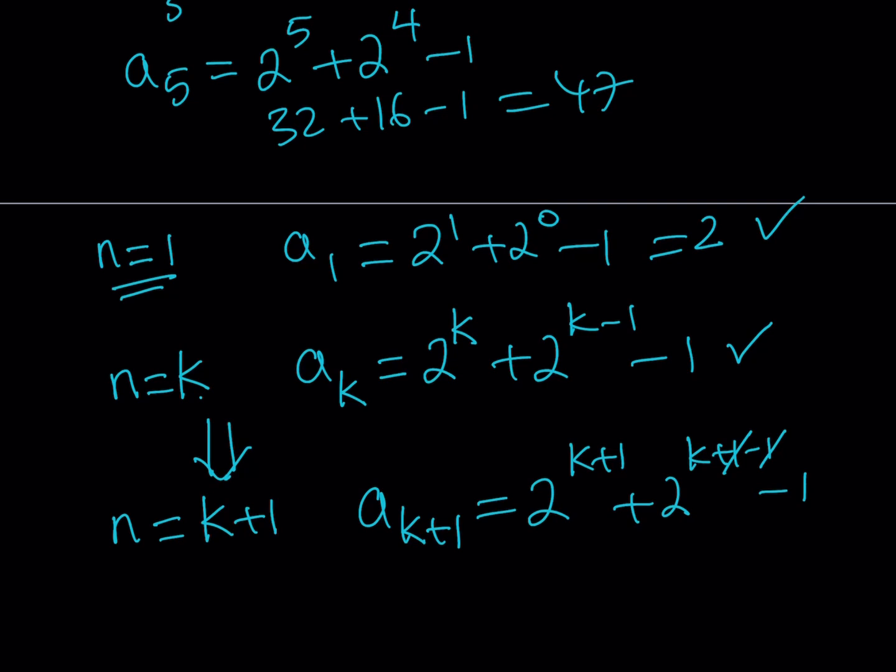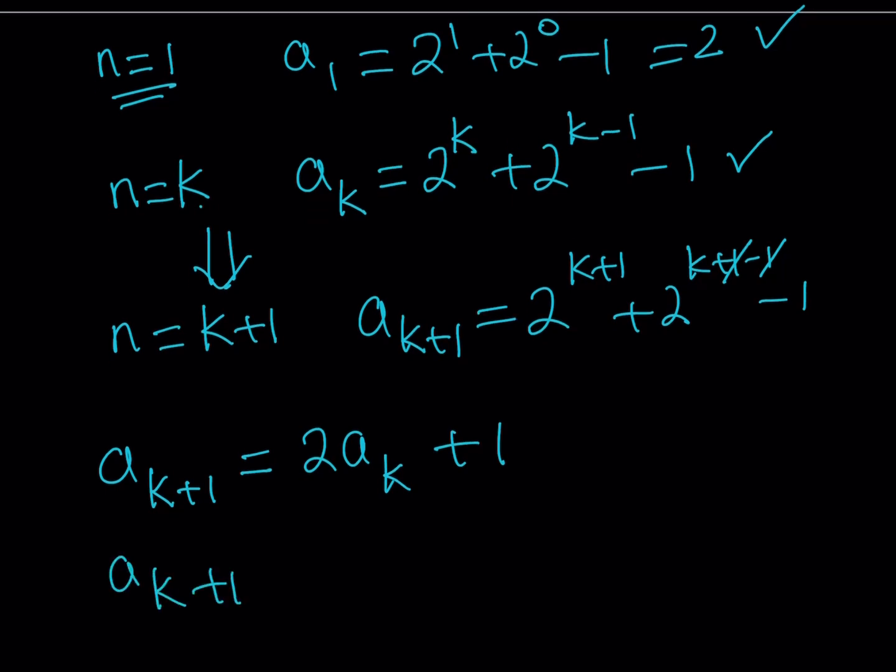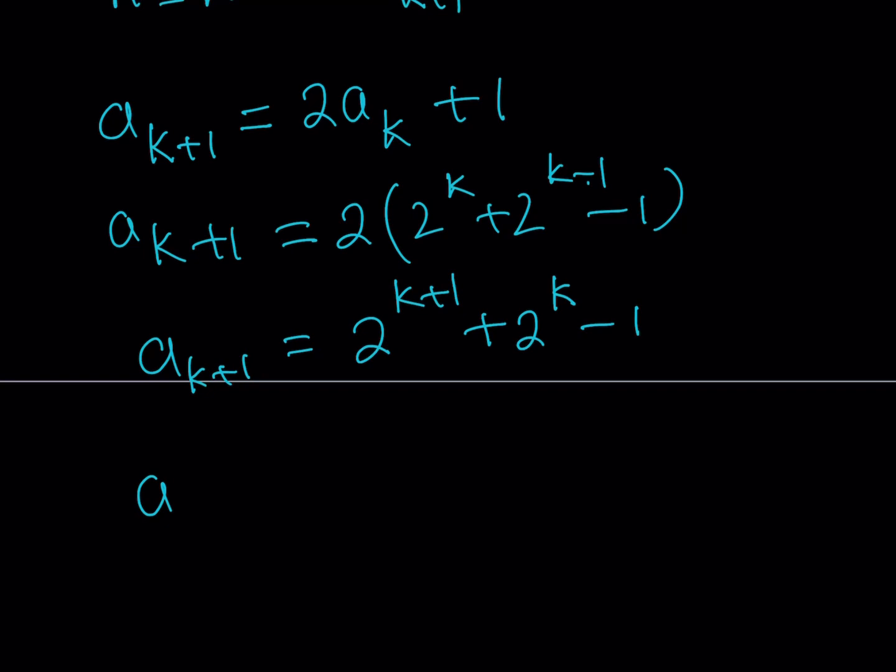As you know, we double and add 1. So if you want to get the k plus 1st term, you got to take the term before that, the kth term, multiply by 2 and add 1. Based on our assumption, we know that a_k is equal to 2 to the power of k plus 2 to the power of k minus 1 minus 1. Let's distribute this. This is going to be 2 to the power of k plus 1 plus 2 to the power 1 times 2 to the power of k minus 1. This tells you that our formula for a_k implies a_{k+1}, which means by mathematical induction, this formula is true. It's been proven.